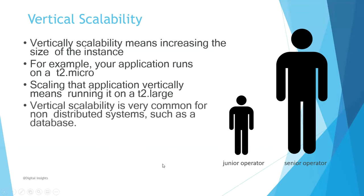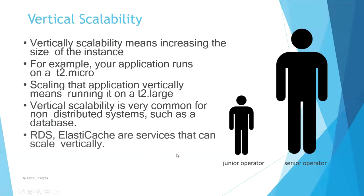Vertical scalability is very common for non-distributed systems such as a database. We can have database running on those instances or some other service like the web server, web services that we saw yesterday. And then you have RDS, which is a relational database service provided by AWS, ElastiCache, and services that can scale vertically.